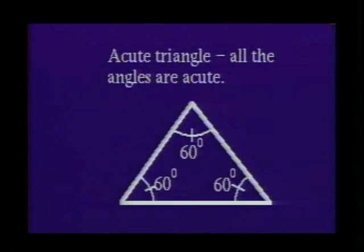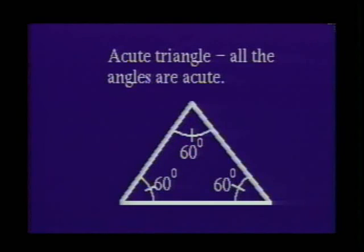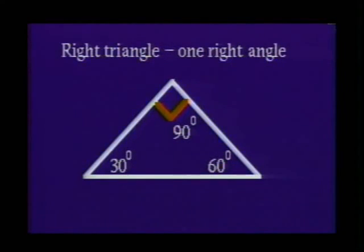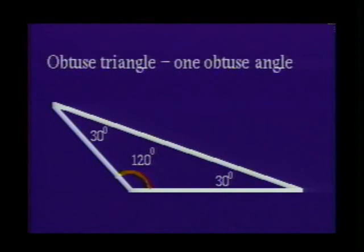If all the angles of a triangle are acute angles, the triangle is called an acute triangle. If a triangle has a right angle, it is called a right triangle. If one angle of the triangle is obtuse, the triangle is called an obtuse triangle.